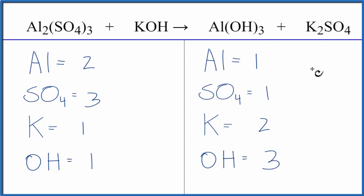Let's start by balancing our aluminums first. We have two here and one here, so we could put a coefficient of two in front of the aluminum hydroxide. One times two, that gives us two. The aluminums are balanced. Then we have our three hydroxides times two, that'll give us six of those.